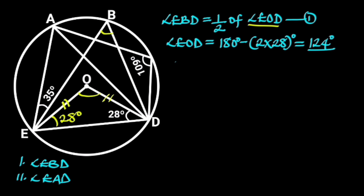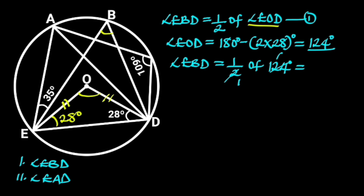Substituting the value of angle EOD in equation 1, it follows that angle EBD equals 1/2 times 124. 124 divided by 2 is 62. Hence, angle EBD equals 62 degrees.